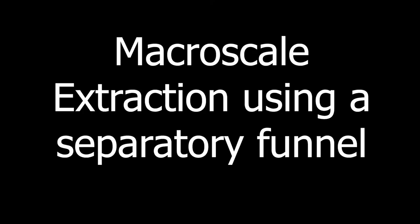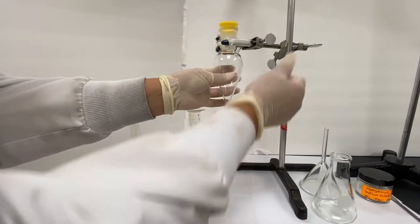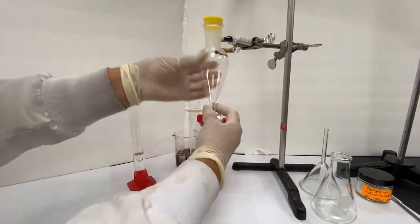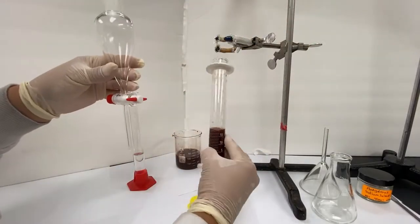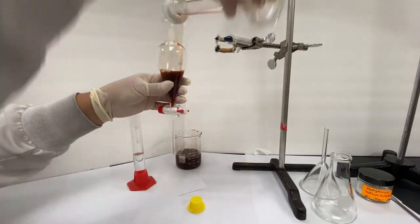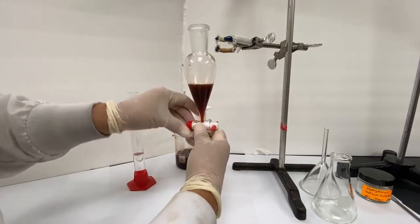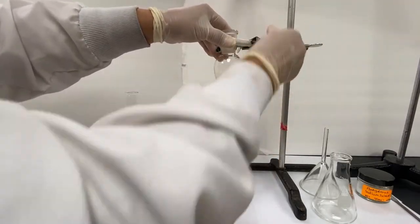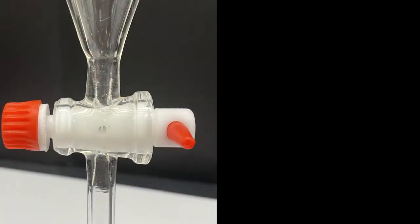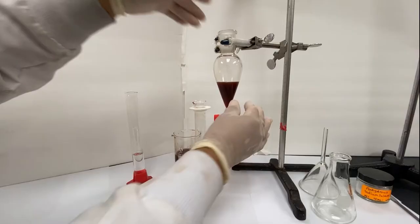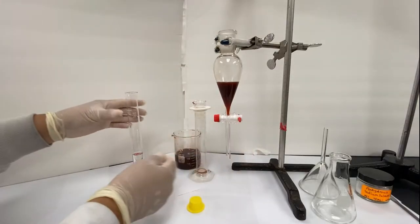Macro scale extraction using a separatory funnel. First, add 20 milliliters of brewed tea to the funnel. Be sure that the stopcock is closed. You can make sure it's closed by making sure the hole in the plastic is about 90 degrees off from vertical. Here's what it looks like closed, and here's what it looks like open.